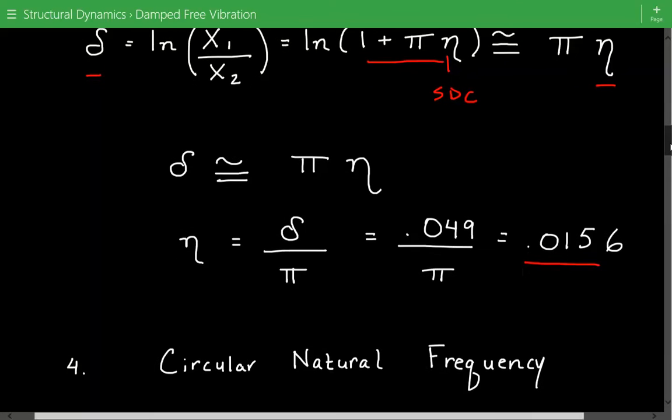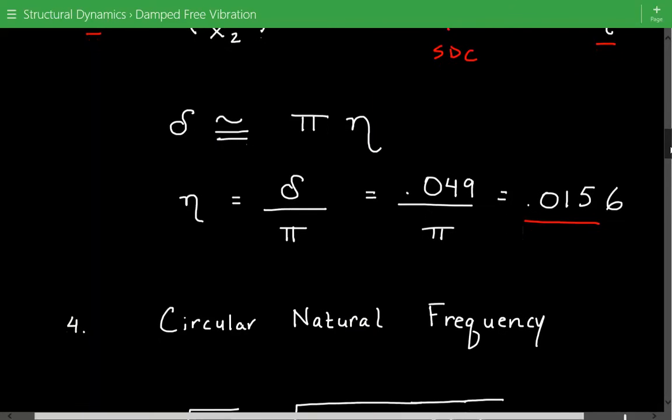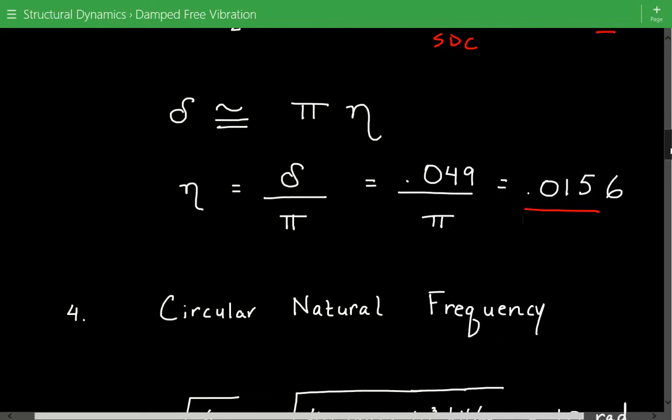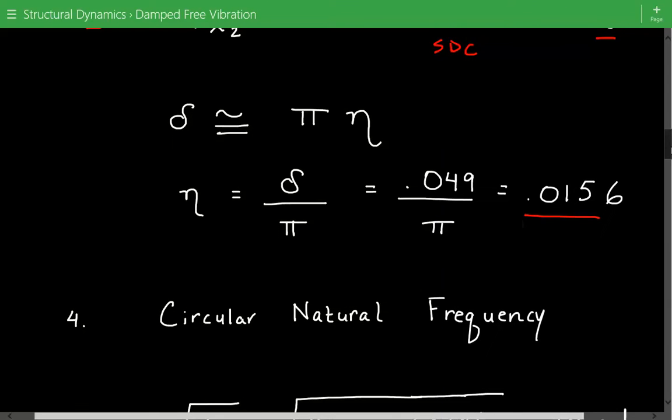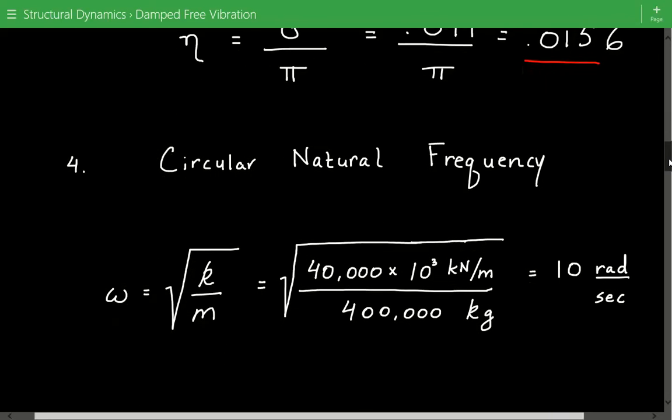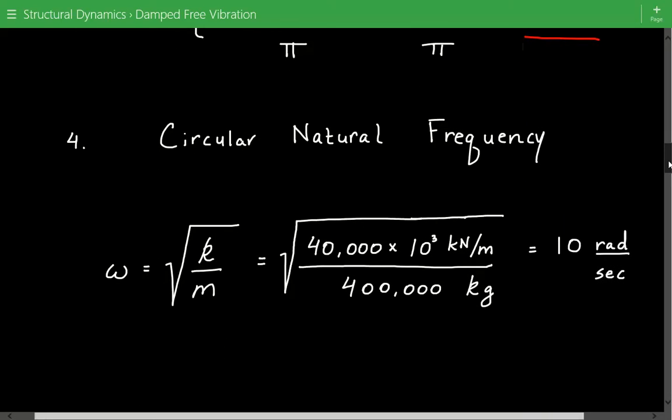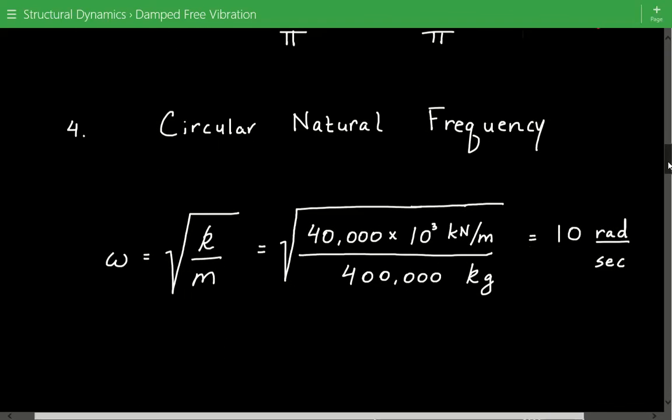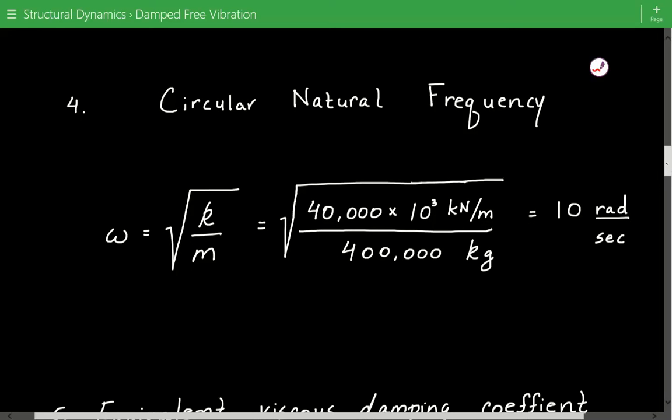Now we need to calculate the circular natural frequency because in order to calculate the equivalent viscous damping coefficient we need to know the circular natural frequency omega. Omega is simply equal to the square root of the stiffness divided by the mass, so that's equal to 10 radians per second.